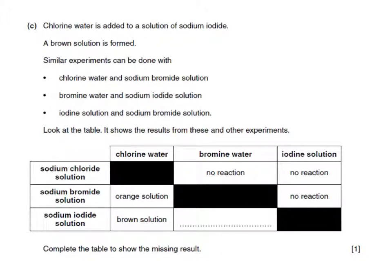Now a question about displacement reactions. Chlorine water is added to a solution of sodium iodide and a brown solution is formed. Similar experiments can be done with chlorine water and sodium bromide, bromine water and sodium iodide, and iodine and sodium bromide. Chlorine is the most reactive, so it displaces bromine out of solution giving an orange solution — the colour of bromine in water with no hexane added. Chlorine also reacts with sodium iodide to give a brown solution of iodine. So brown indicates iodine and orange indicates bromine. When we add bromine to sodium iodide, bromine is more reactive than iodine, so it displaces iodine and we should get a brown solution.